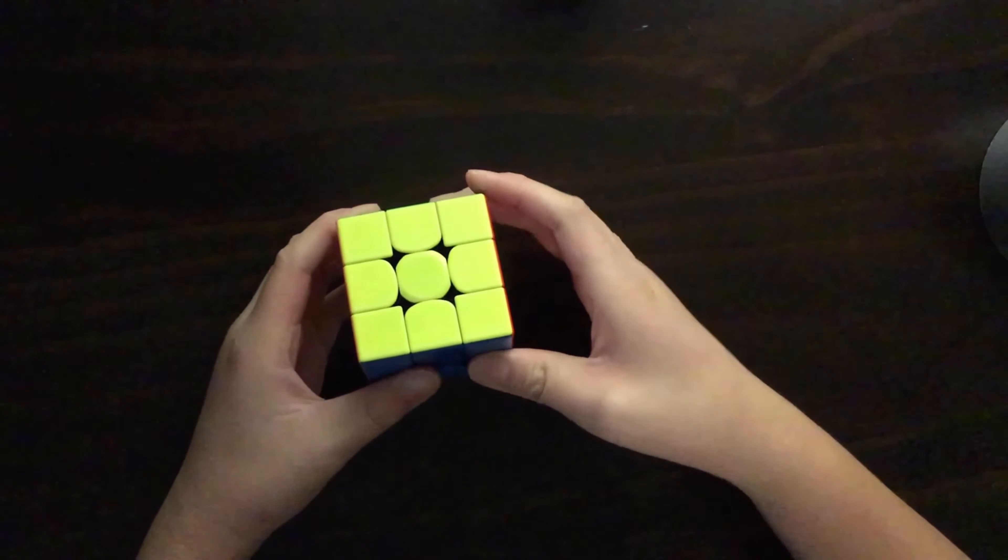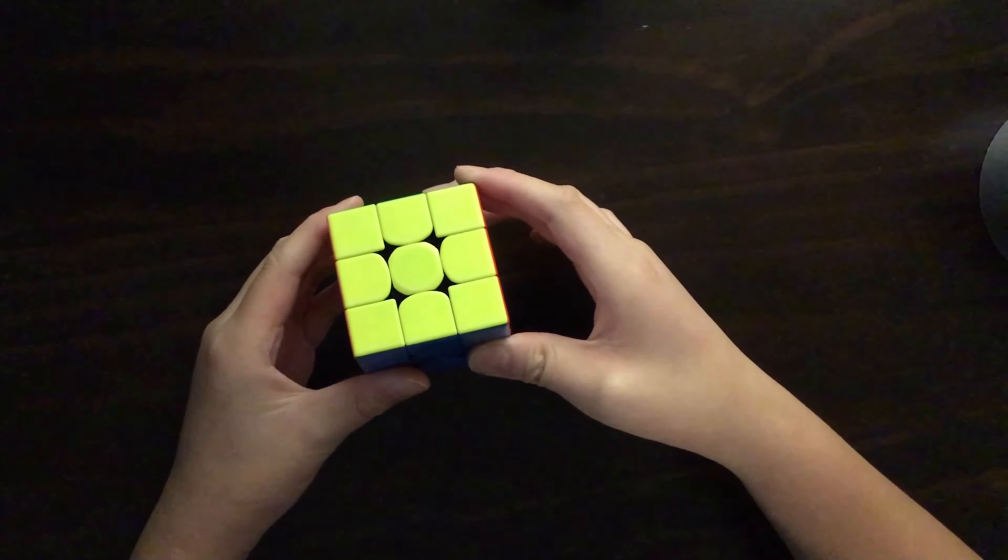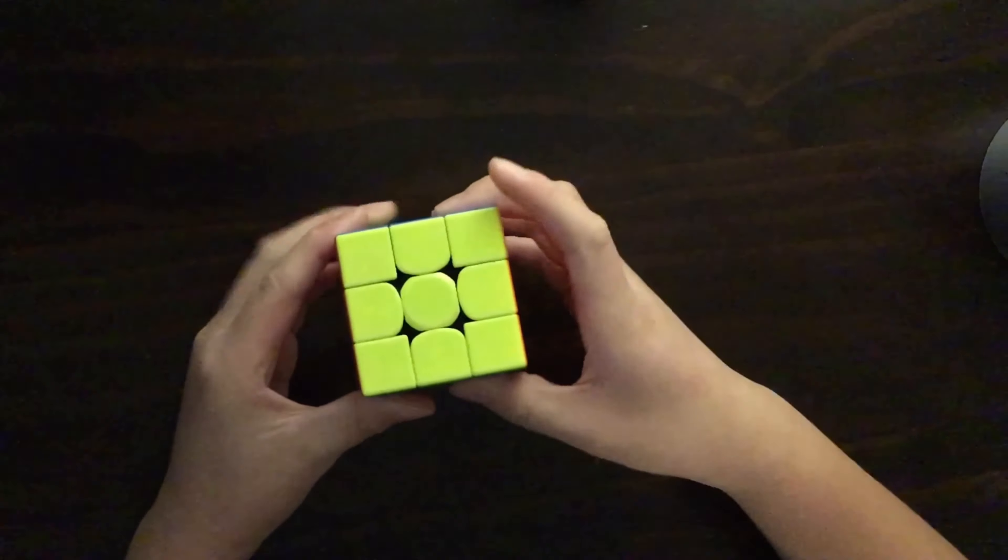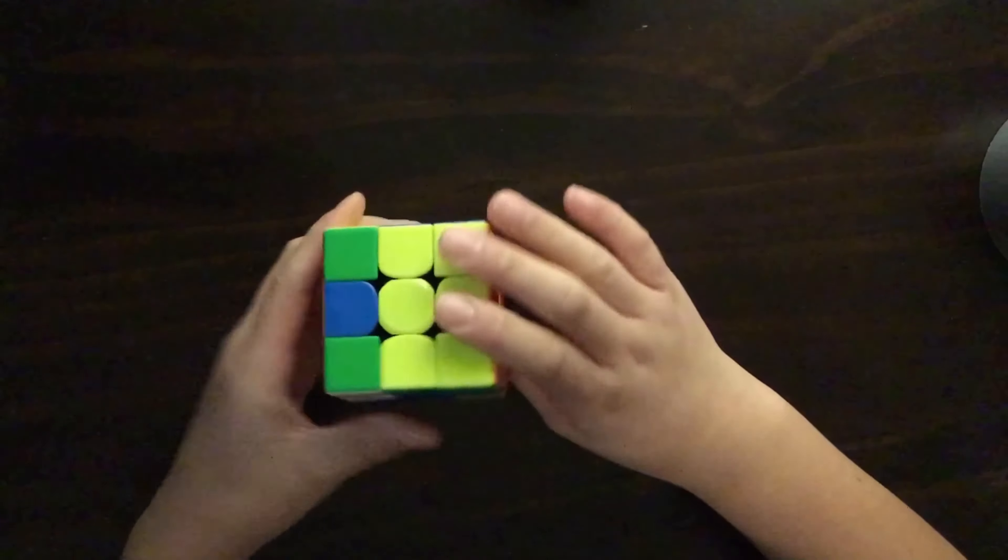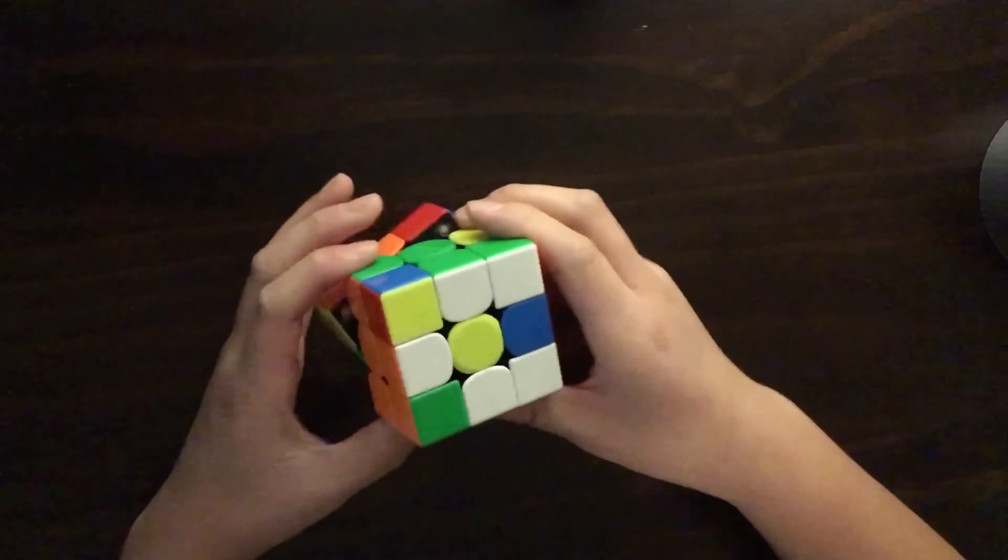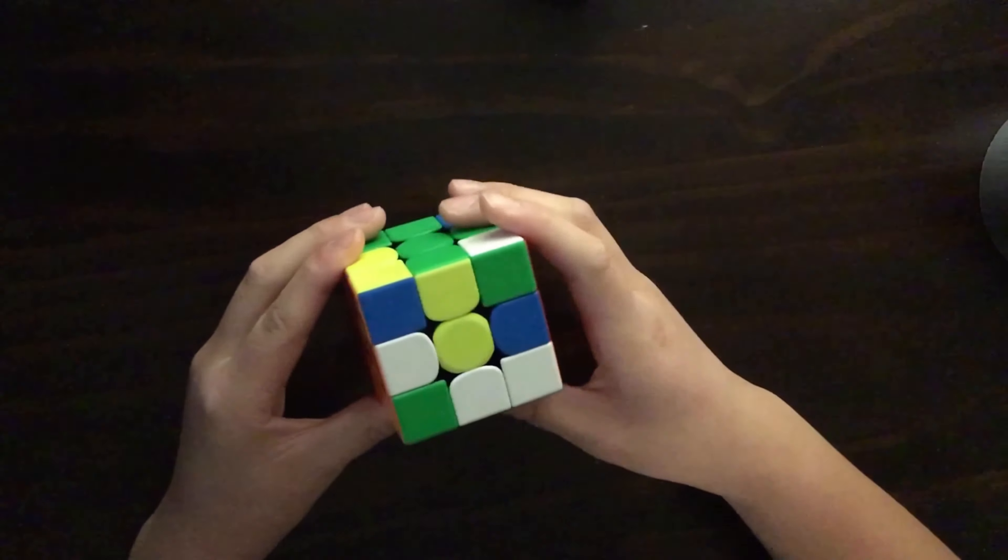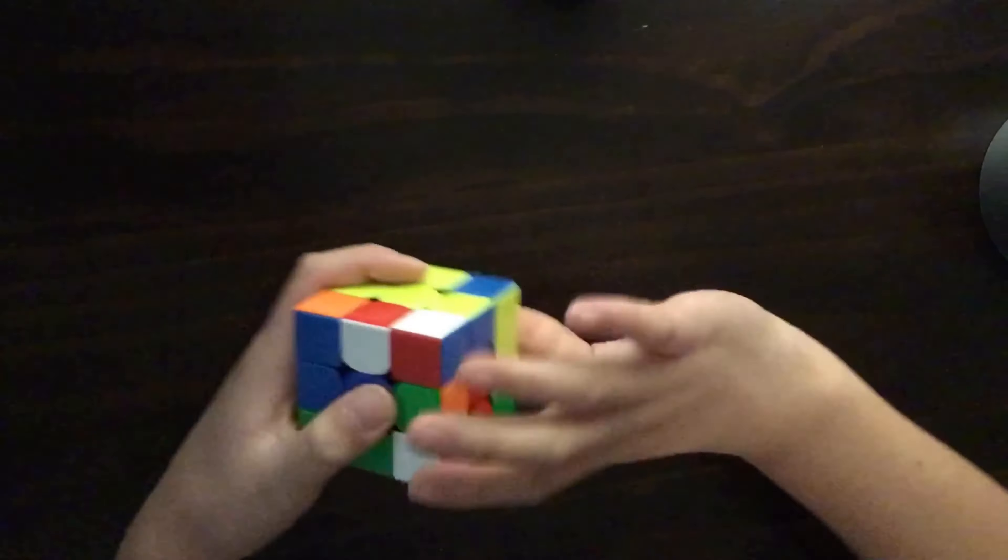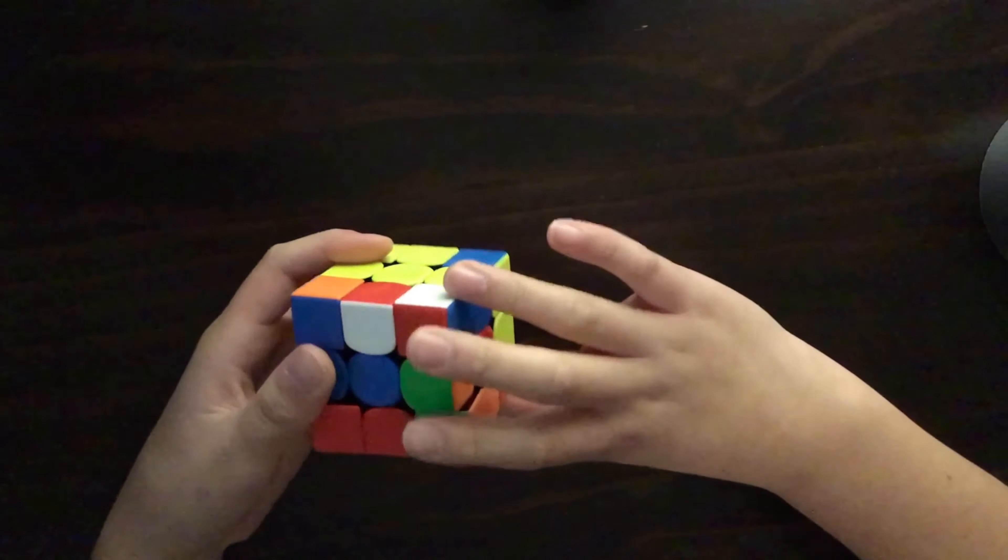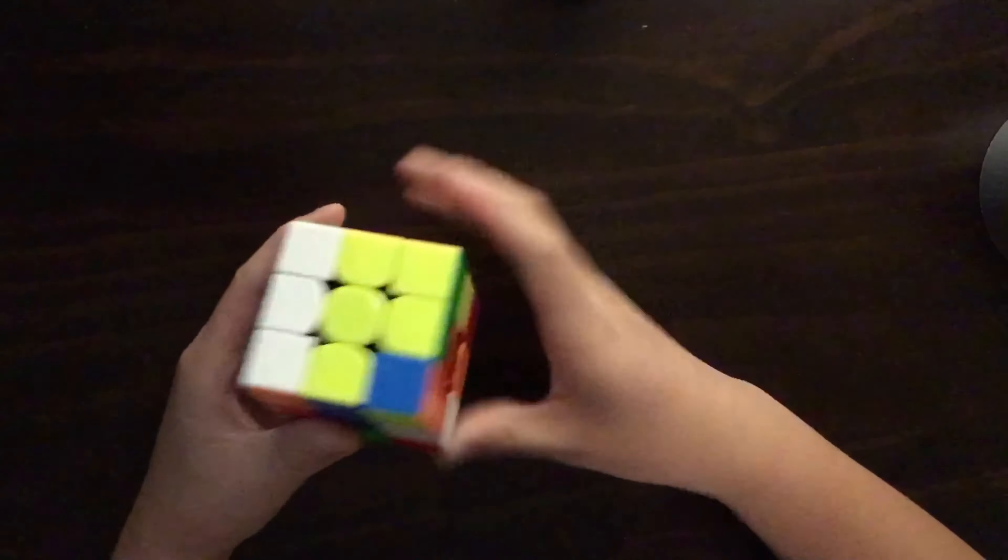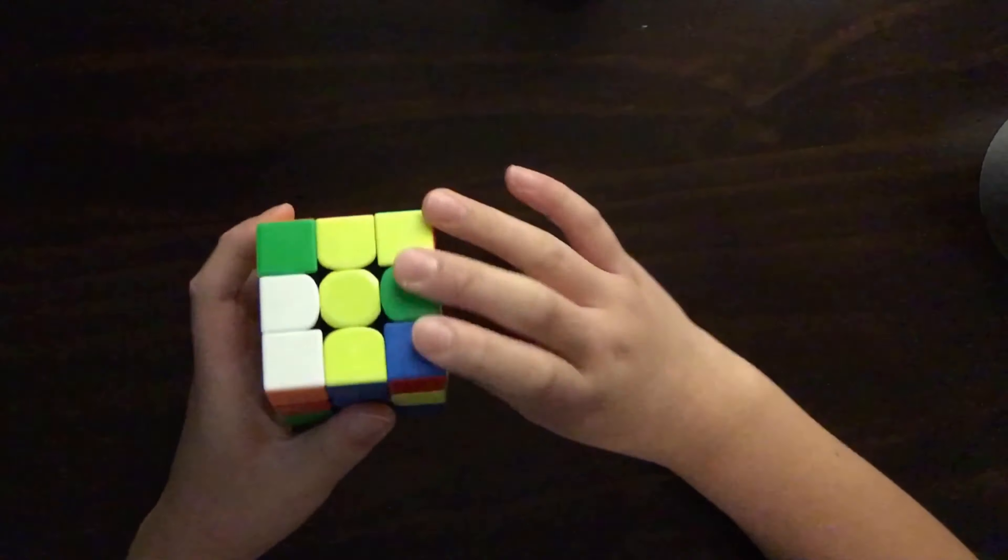So first I'm going to scramble the cube with a scramble from CS timer. So, D2, U2, counter L, D2, R, B2, F2, L2, D2, B2, counter L, D, counter F, R2, counter D, F, U, B, counter R, D.